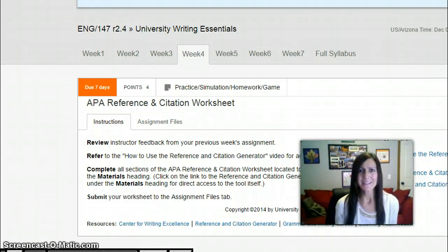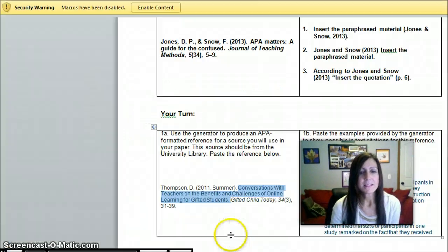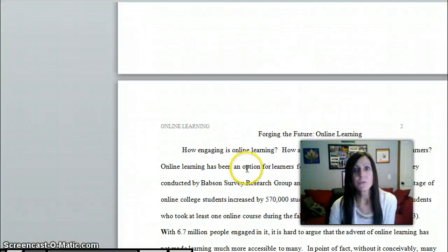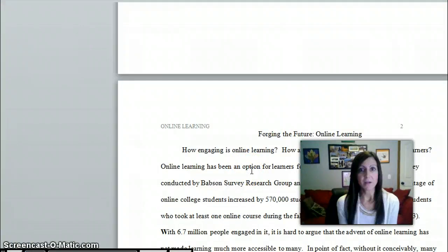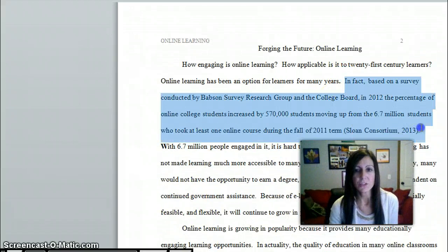Okay so what is an in-text citation? Let's take a peek at one. An in-text citation is a citation that denotes a bit of paraphrased information or it might denote a direct quote. For example, here is a bit of paraphrased information.